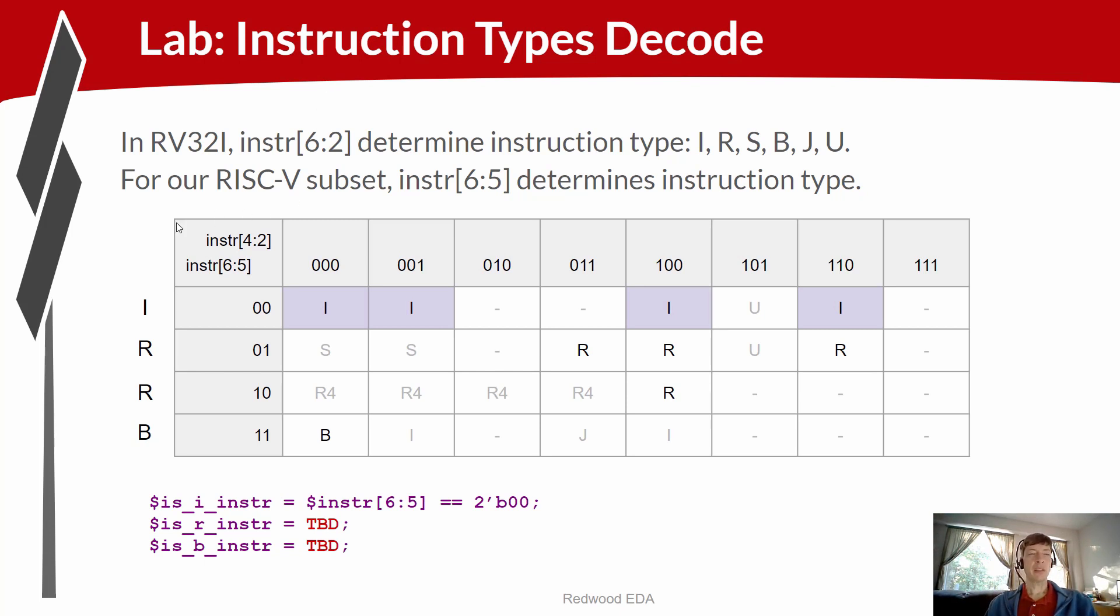This is the table of instruction types based on the opcode from the instruction for RISC-V. And we can simplify things since we only need to support these three instructions. So instead of interpreting this entire table, if you look at the instructions that we need, we can actually just interpret based on the row that we're on.